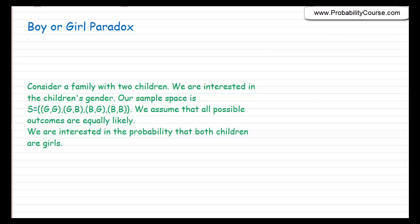In this video we talk about the boy or girl paradox. This refers to a set of famous problems in probability theory, and the reason it is called a paradox is because the answers are sometimes counterintuitive. We'll talk about that in this video. Here is the scenario: we consider a family with two children and we are interested in the children's gender.